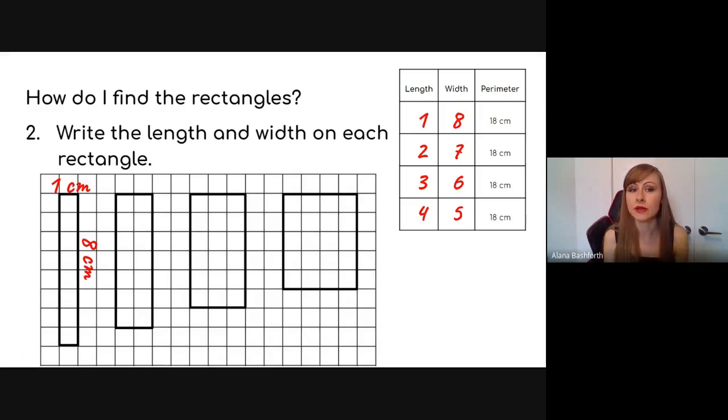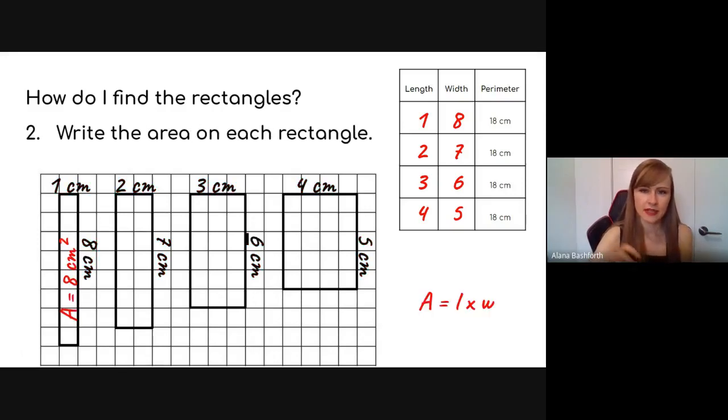And then the next thing you want to do is write the length and width on each rectangle. So that first one there, it's one centimeter and eight centimeters. And then you just continue on with the rest of each centimeter written on there. And then you are going to write the area of each rectangle. And some of them are long and skinny. You can write it sideways. So area for the first one is eight centimeters squared. So you can go one times eight equals eight, or you can just count them up. But I find it easier to do the multiplying of the simple math. But if you don't know the answer, just count up the squares. And so for the rest of them, the two by seven would be 14 centimeters squared. Three by six would be 18 centimeters squared. And the four by five would be 20 centimeters squared.